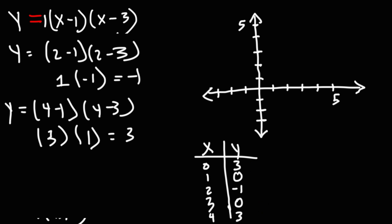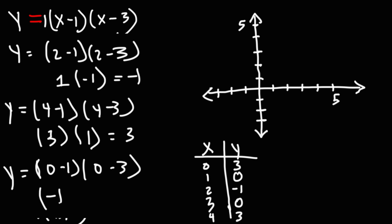We can confirm it. If we replace x with 0: 0 minus 1 is negative 1, 0 minus 3 is negative 3, and negative 1 times negative 3 is positive 3.